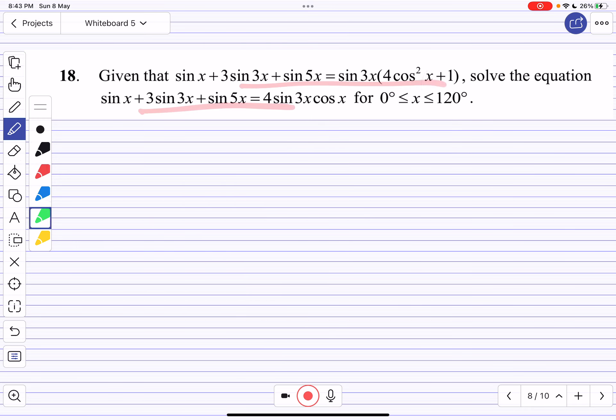I can see that sin x, sin 3x, and sin 5x are given to me, so definitely I'm going to take this result and copy paste it. I'll write it as 4sin 3x cos x.